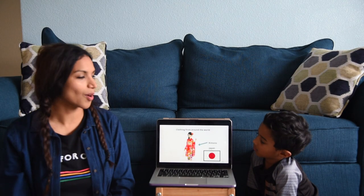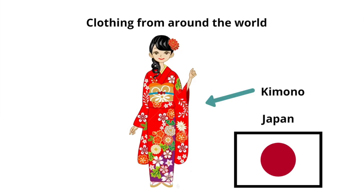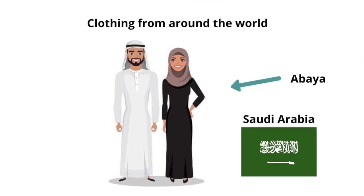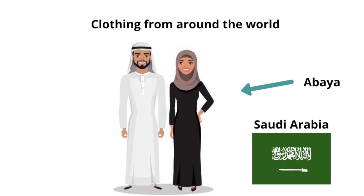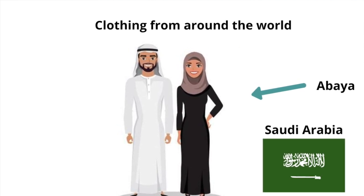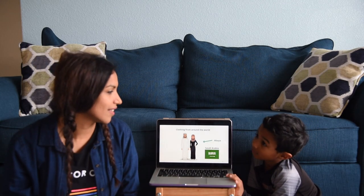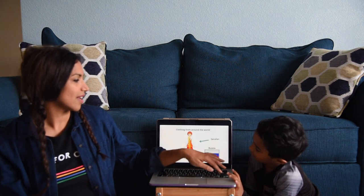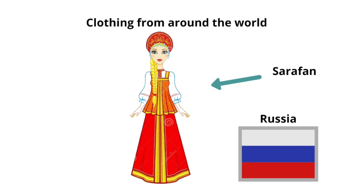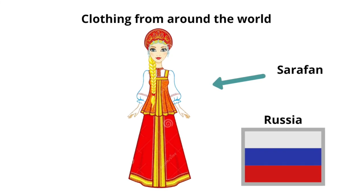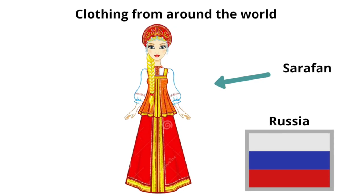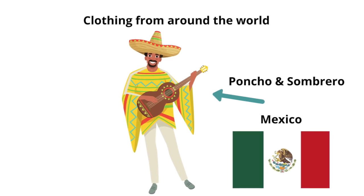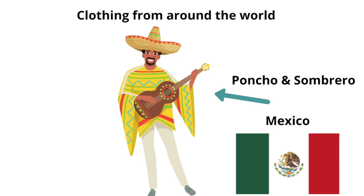This is a kimono from Japan — the teacher actually owns one. From Saudi Arabia, they wear an abaya: men wear white and women wear black. The teacher wore one in Dubai. This is a sarafan — a dress like an overall, with an undershirt and an overshirt — from Russia. And from Mexico, the poncho and sombrero.